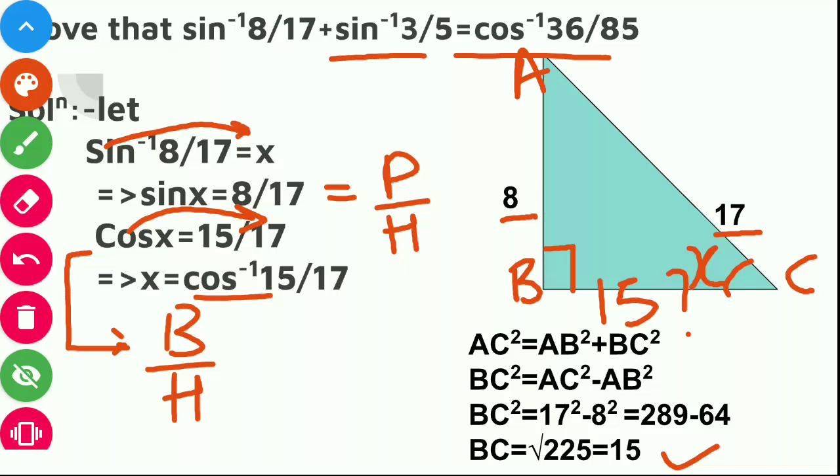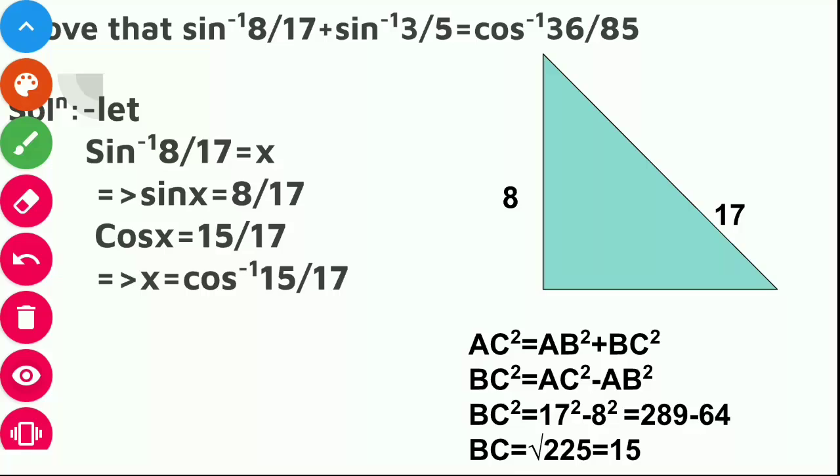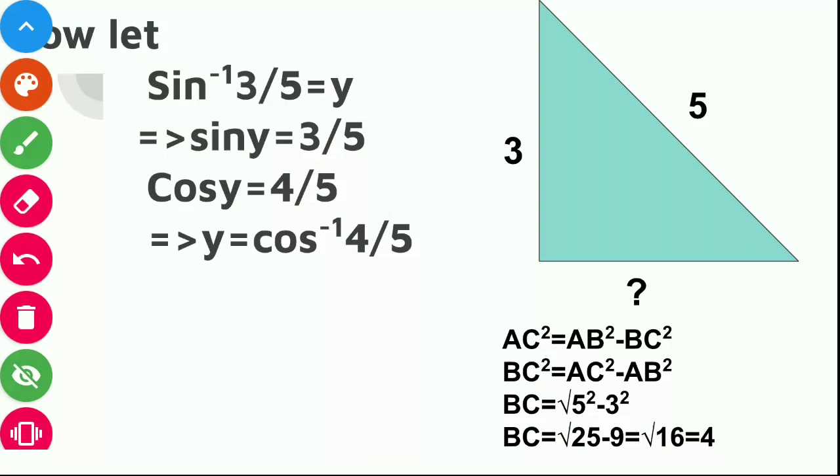Similarly, we will convert this sin inverse 3 by 5 into cos inverse. Here we have supposed that sin inverse 3 by 5 is equal to y. Sin will move that side. It will become sin y is equal to 3 by 5.